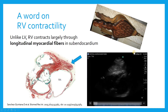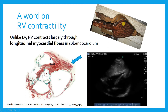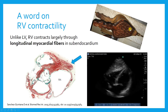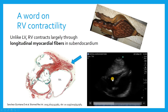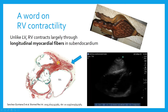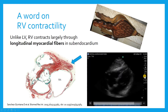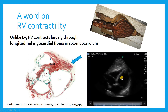The right ventricle ends up contracting like a bellows mechanism. If you've ever tried to light a fire the old-fashioned way — I actually have one of these in my living room — you can light a fire by squeezing a bellows, and that's actually how the RV squeezes. Because of the way the valve and everything is tethered together, when these longitudinal myocardial fibers pull toward the apex, they cause the free wall to behave like a bellows. That's important when you start to look at RV dyskinesis and think about how the RV contracts quite differently from the LV.